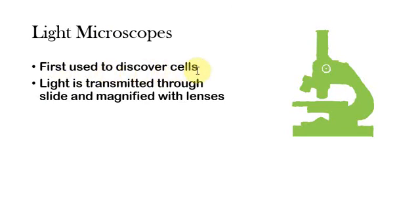There were these two scientists named Hooke and Leeuwenhoek. We don't really need to know about them, but if you want to look into that, the history is pretty interesting. Essentially what happens with a light microscope is that light, as the name suggests, is transmitted through a slide and then magnified with the lenses.